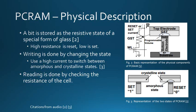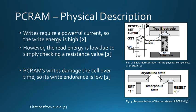PC-RAM's internal structure is surprisingly intuitive. A bit is stored through the modification of the resistance of a special type of glass. This glass has two forms: amorphous and crystalline. The glass can be switched between these forms through the application of a strong current. The amorphous form has very high resistance, and the crystalline form has low resistance. Writing the bit simply requires switching between these forms, and reading the bit consists of checking the resistance of the cell. Since a write literally involves melting glass, PC-RAM uses a lot of energy in its writes. However, since a read merely checks the resistance of the cell, this operation is cheap. Additionally, the write endurance is low, which is intuitive due to the damaging nature of the write operation.